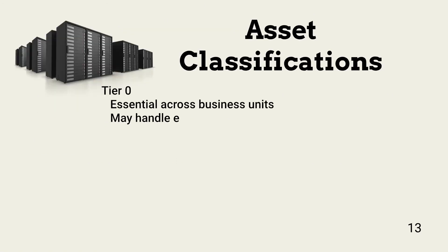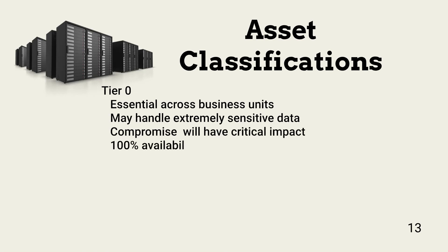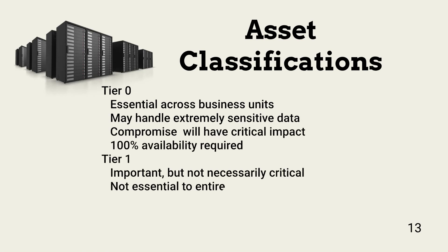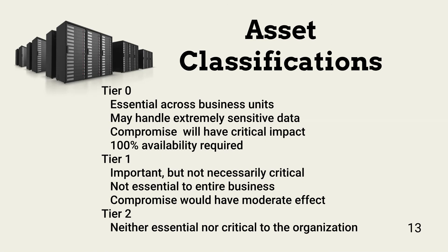This is an example of how to classify systems. There are many ways to approach this, and each organization must use the asset classification scheme that works best for it. Data classification and categorization are different but similar processes. System classifications are needed for effective business continuity planning.